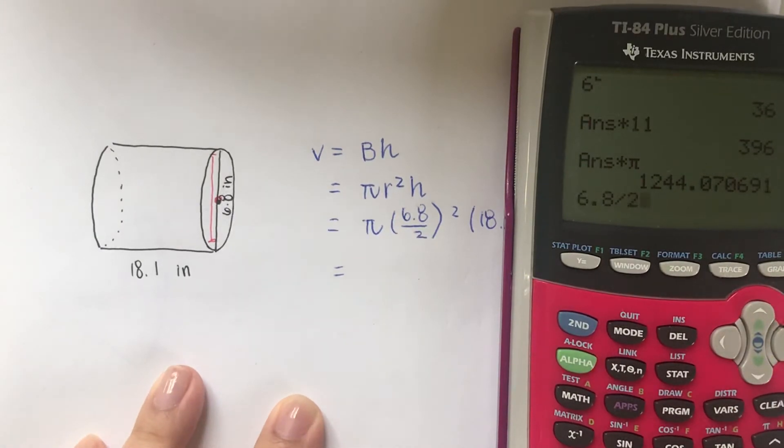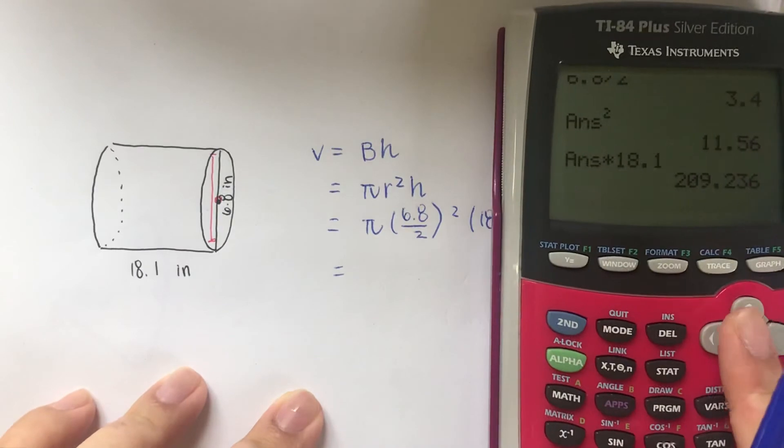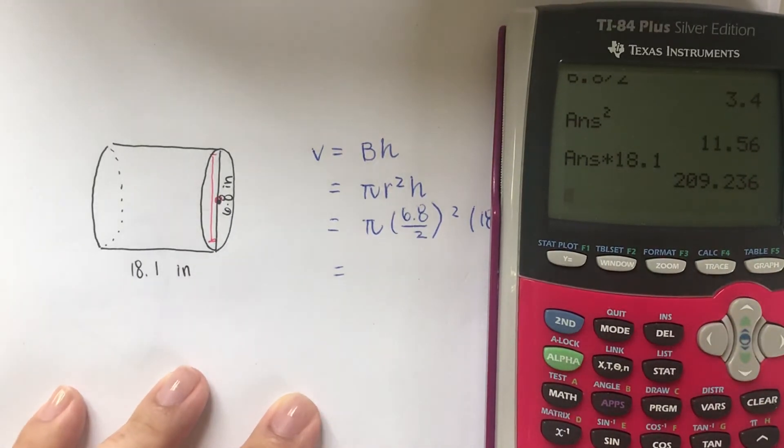6.8 divided by 2 is 3.4, raised to the second power, multiplied by 18.1. So I'm putting everything in the calculator step by step, as you can see. I don't input everything all at once because sometimes there might be a calculation error. That's why I like to do it step by step. The answer should be the same at the end.